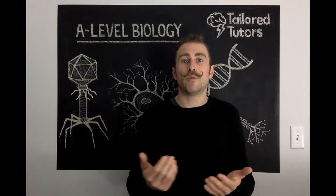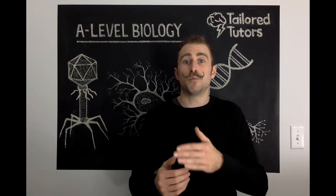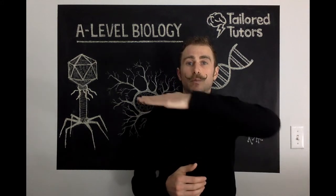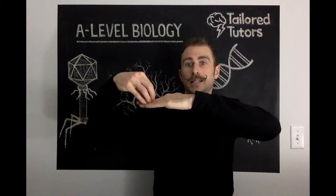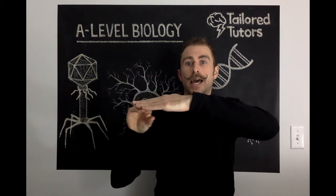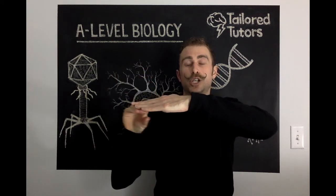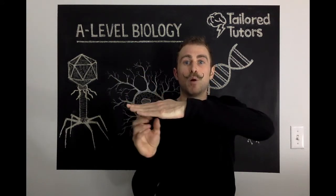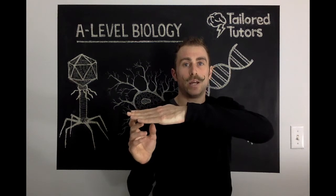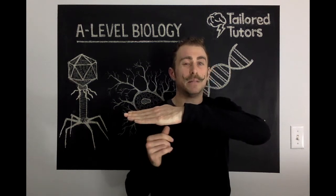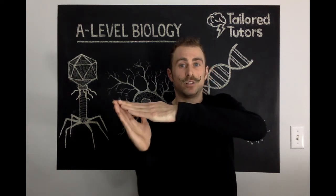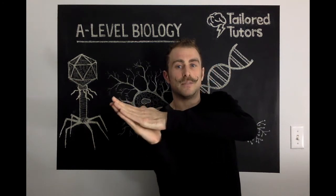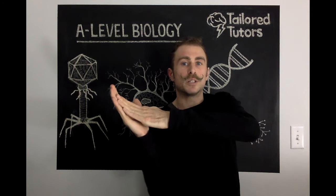In shoots it's completely the opposite. With a horizontal shoot, the light lands on one side and the IAA moves to the shaded side, but here it promotes cell elongation. You have to be careful not to say cell division, because the cells aren't technically dividing.